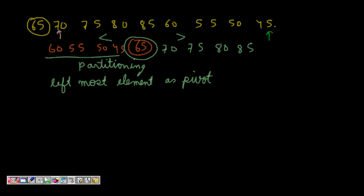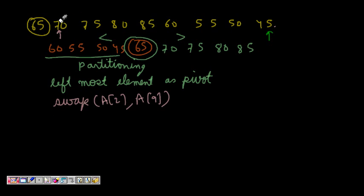The left pointer stops at 70 and the right pointer stops at 45 because they are at wrong places, so I can swap A[2] and A[9]. Now 45 goes to the left position and 70 goes to the right position.